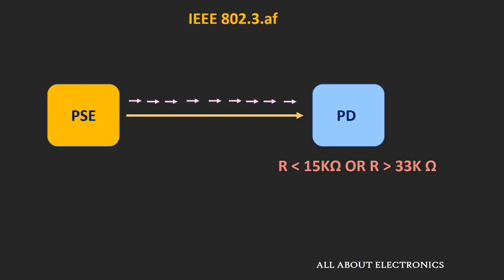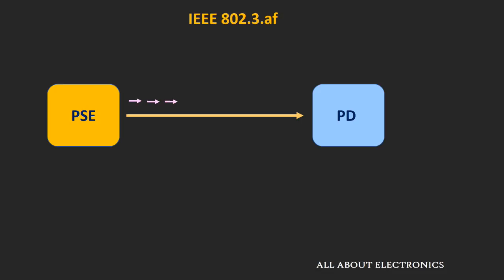This entire signaling procedure for detecting the resistance across the powered device is known as resistive power discovery, and it is defined under the IEEE 802.3af standard. Once this procedure gets completed, the PSE finds out how much power is required by the powered device. To find that, it applies a specific voltage to the powered device and receives the current flowing through it. In this way, the power source equipment decides how much power should be supplied to this powered device.